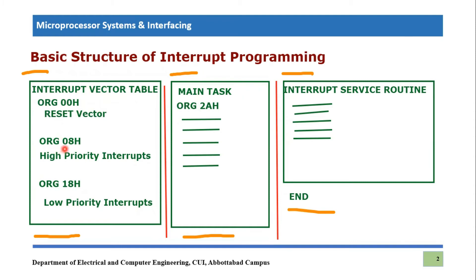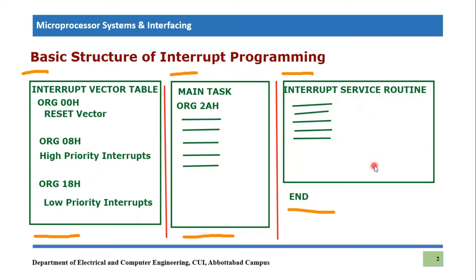The interrupt vector table is basically an enlistment of all possible interrupts. There are two dedicated addresses which are very important: one is 0x08, which is for higher priority interrupts, and the other is 0x18, which is dedicated for low priority interrupts. These are just addresses of service routines — different service routines. The third part of the program is nothing but the definitions of interrupts, or interrupt service routines.